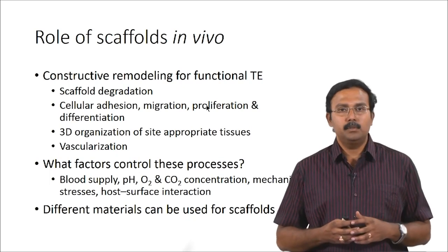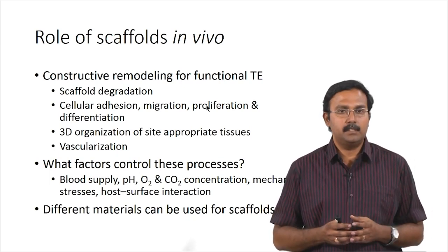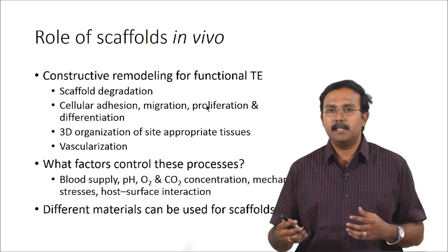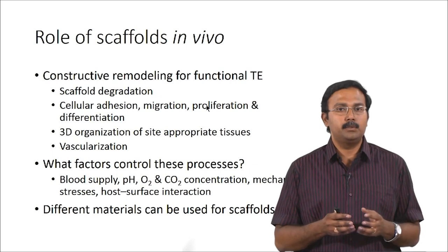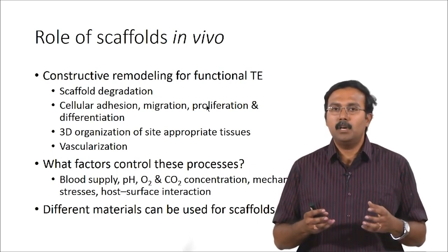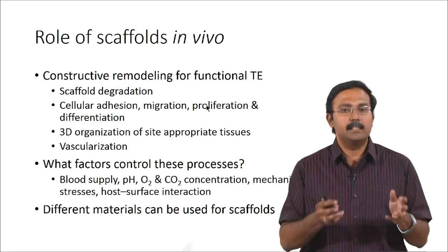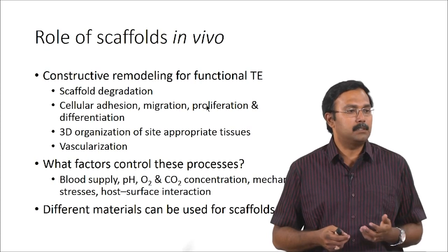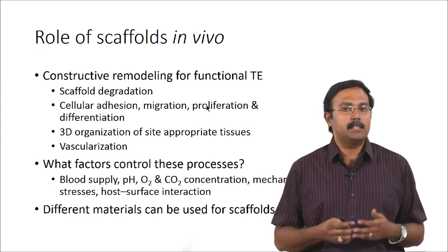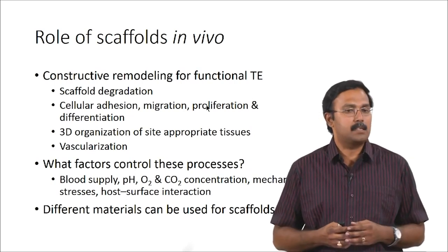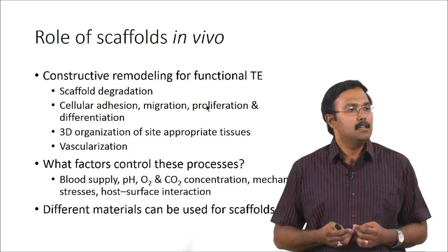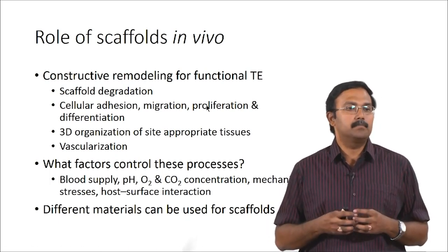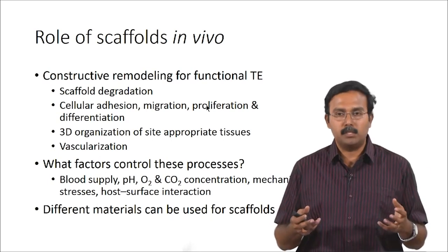The role of scaffolds in vivo is to help in constructive remodeling of a functional tissue-engineered construct. The scaffold must degrade while cells adhere, migrate, proliferate, and differentiate. 3D organization at the site to form appropriate tissue should occur, and vascularization must also be supported. Factors that control these processes include blood supply, pH, oxygen, carbon dioxide concentration, mechanical stresses, and host-surface interactions.